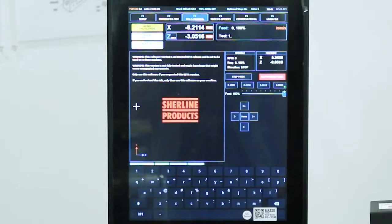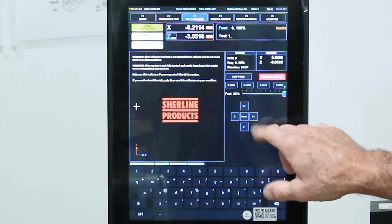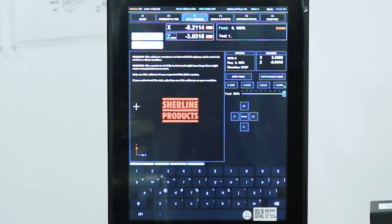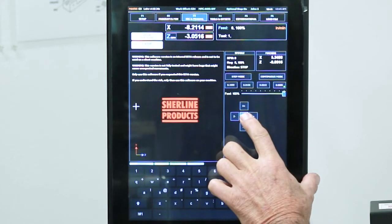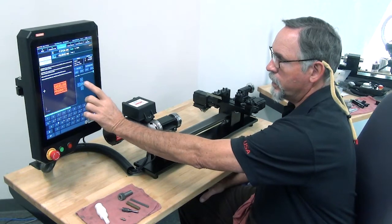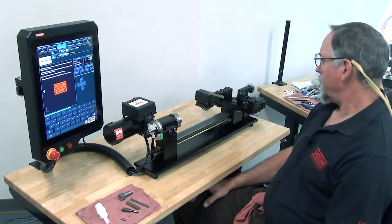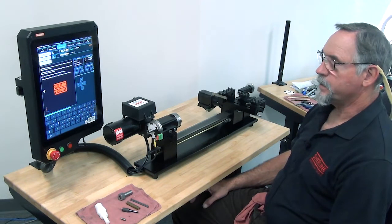You'll see the yellow flashing light telling you that you need to home out the machine. You've got the home button in the middle of your X and Z direction buttons. All you do is push and hold the home button for five to seven seconds and let go and your machine homes out on the Z-axis first and then homes out on the X-axis.